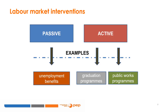Labor market interventions are usually non-contributory and can be divided into active and passive interventions. Active interventions focus primarily on getting people into employment in the formal or informal labor market. Passive interventions support people when they lose employment, such as non-contributory unemployment benefits. Public works programs are schemes that provide temporary work, often for a limited period or maximum number of days—such as six months per year during the lean season. Participants receive cash or food in return for work, sometimes a combination of both, and these programs are therefore sometimes referred to as cash-for-work or food-for-work programs.